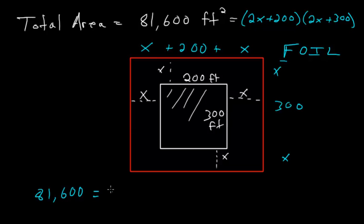And then we'll add the outer terms, this one and this one multiplied together. 2x times 300 will be 600x. And then the inner terms here will just be 200 times 2x, which is another 400x. And then we'll add the last terms multiplied, which is 200 times 300, so that would be 60,000.